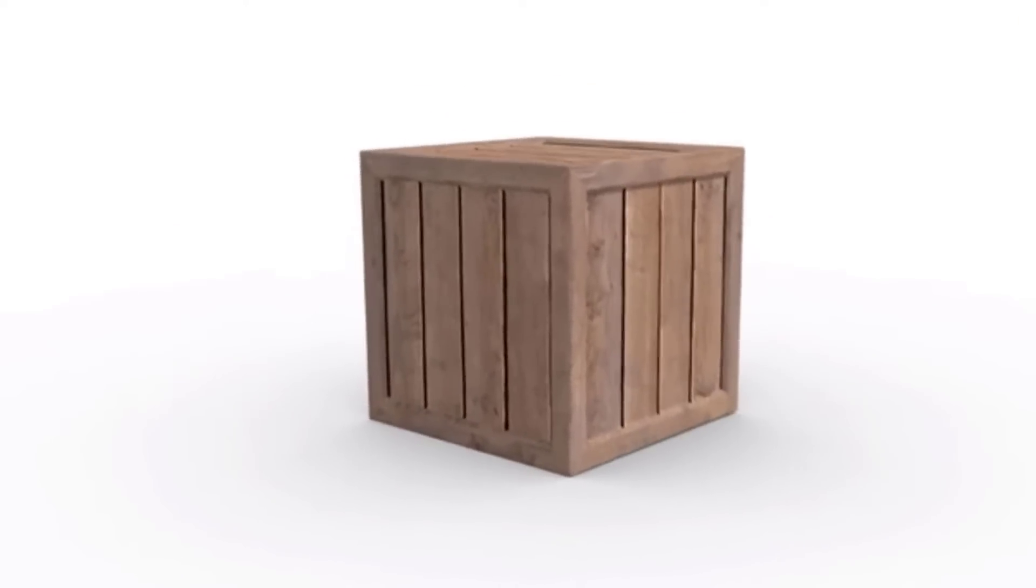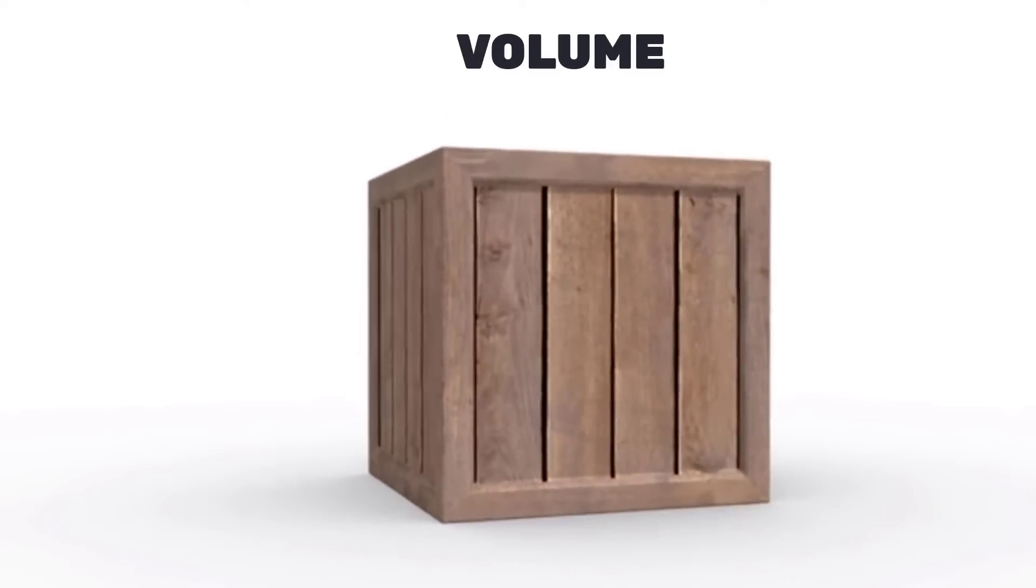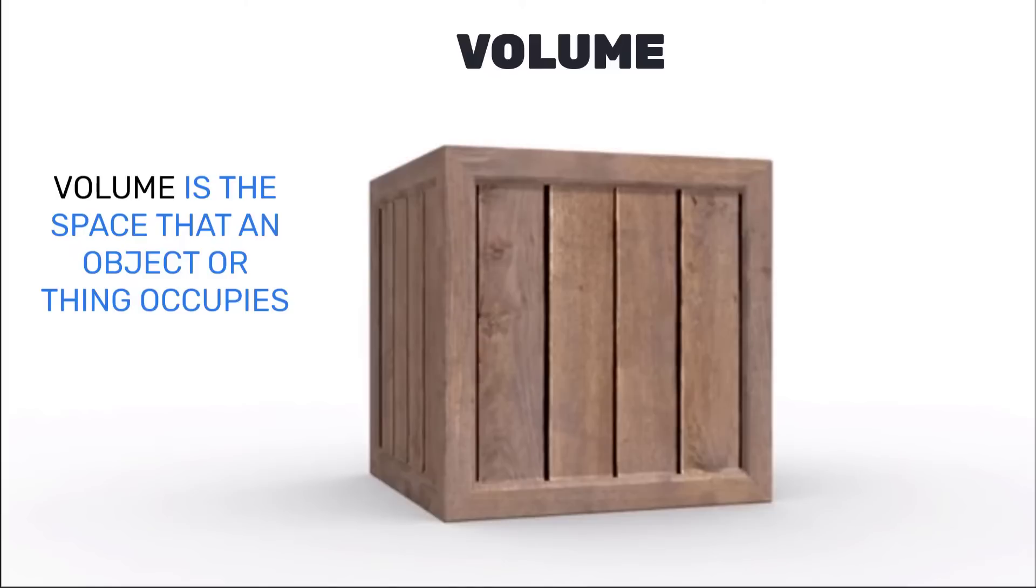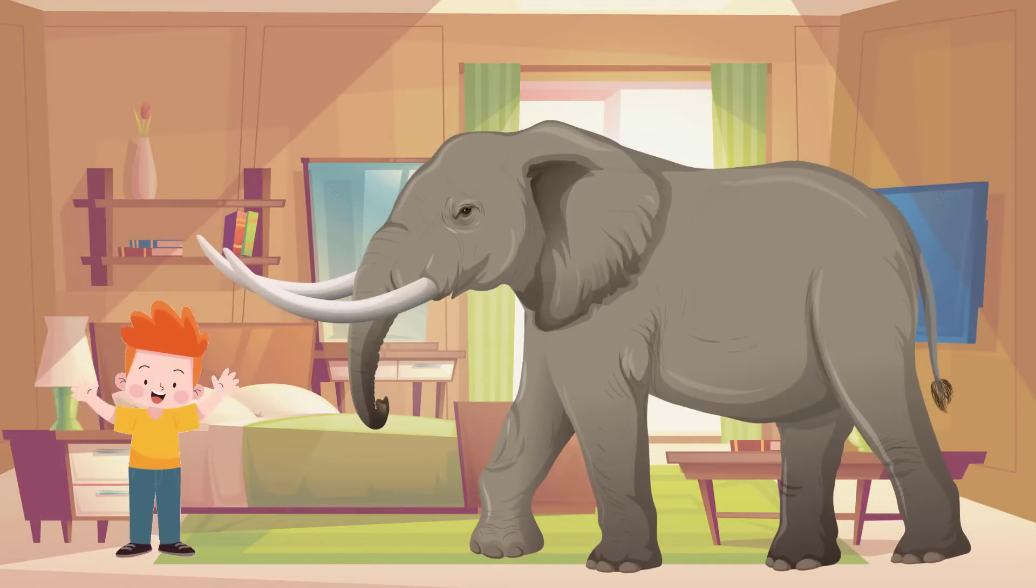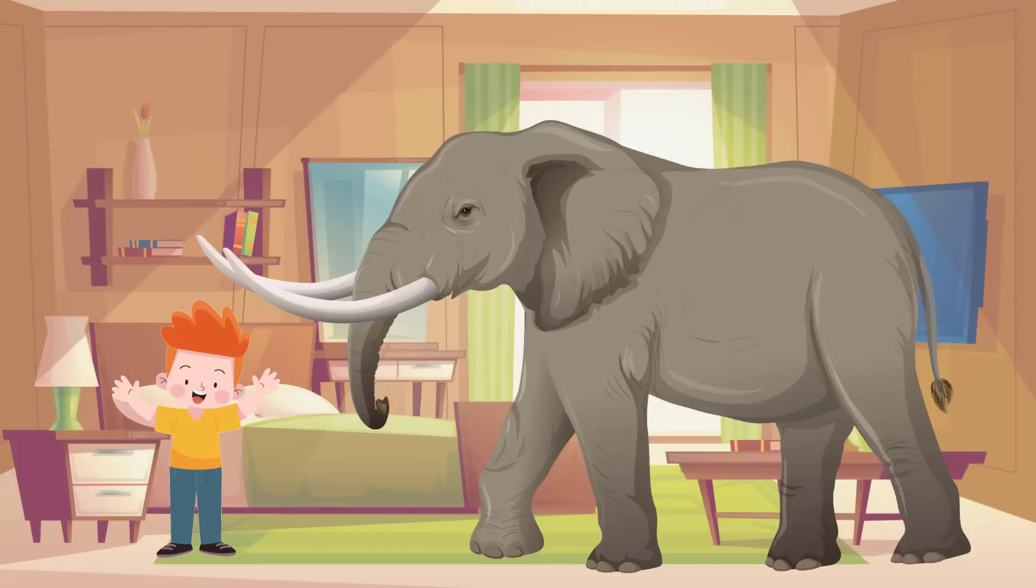Another property of matter is volume, which is the space that an object or thing occupies. For example, if you put the elephant and the child in the same room, we see that the elephant occupies more space than the child, so its volume is greater.